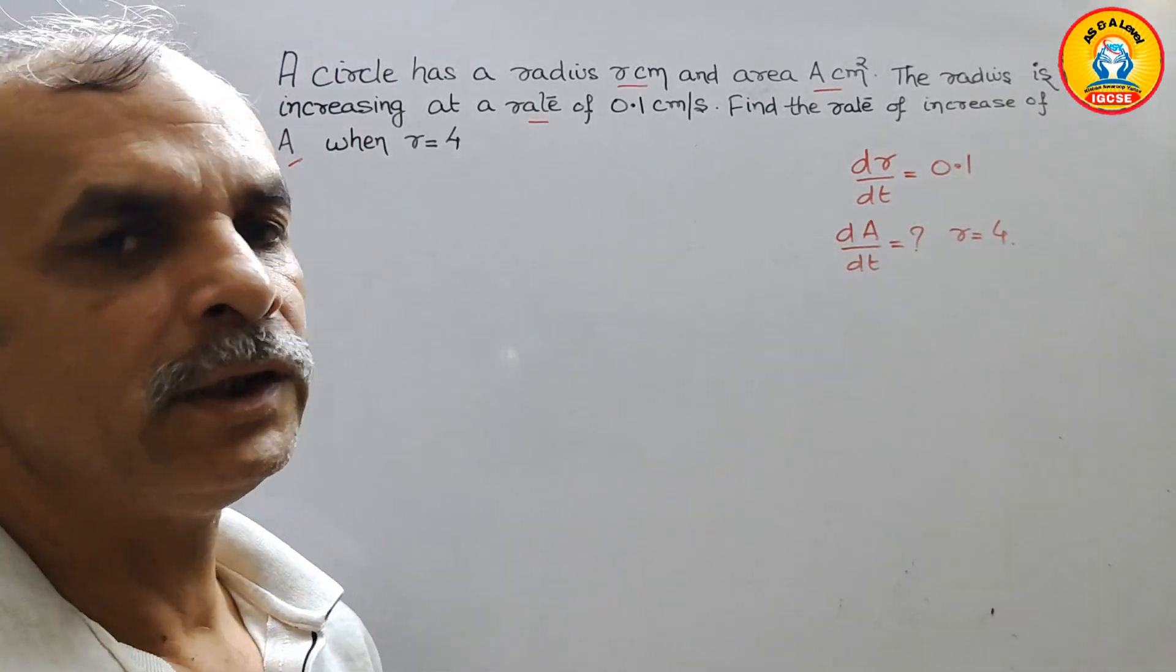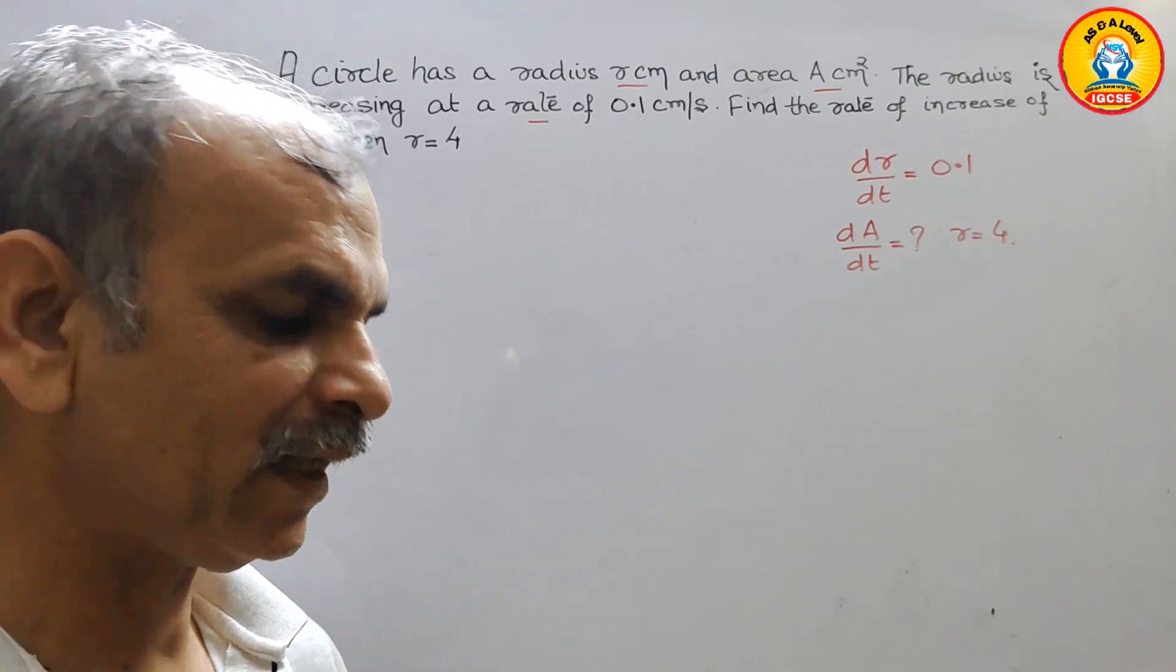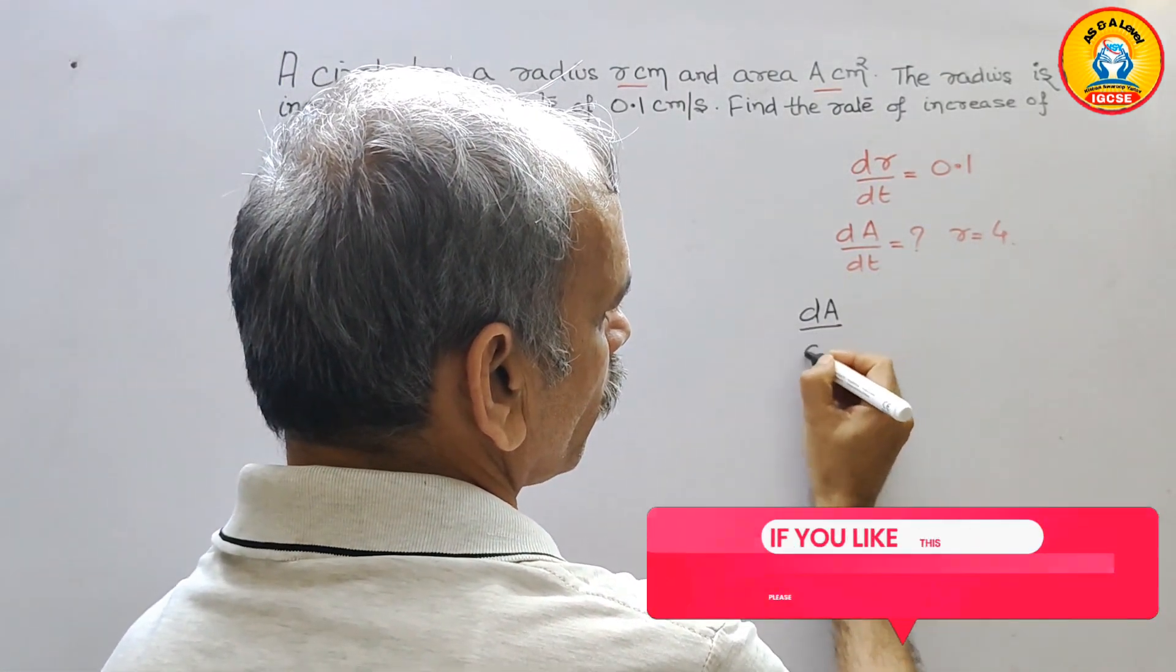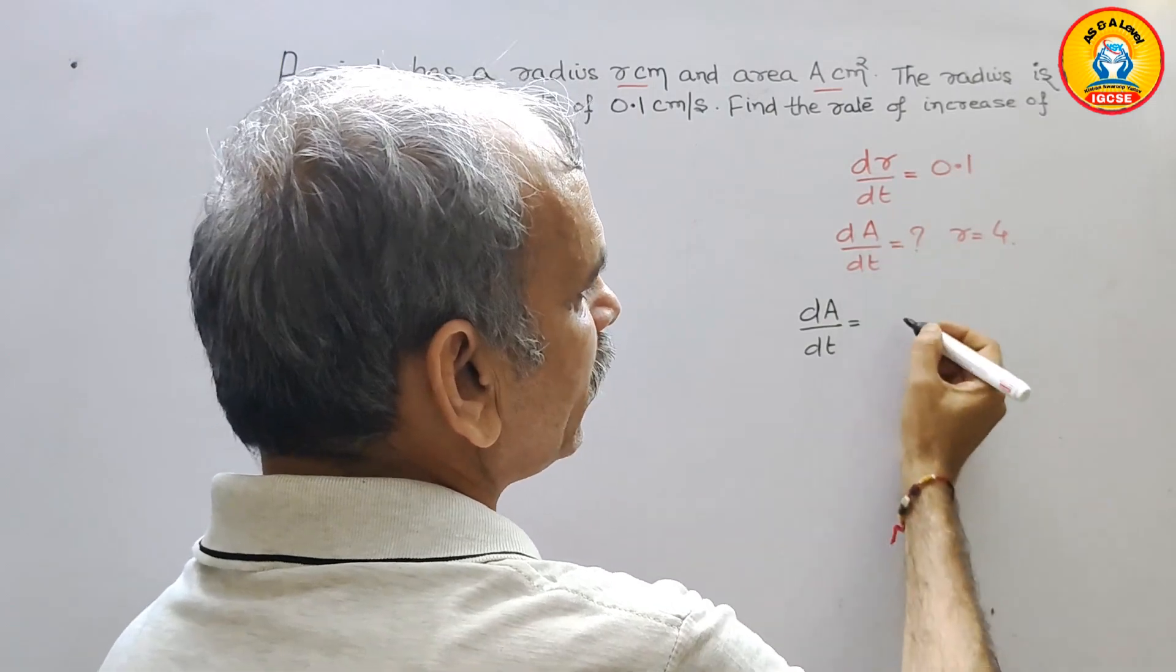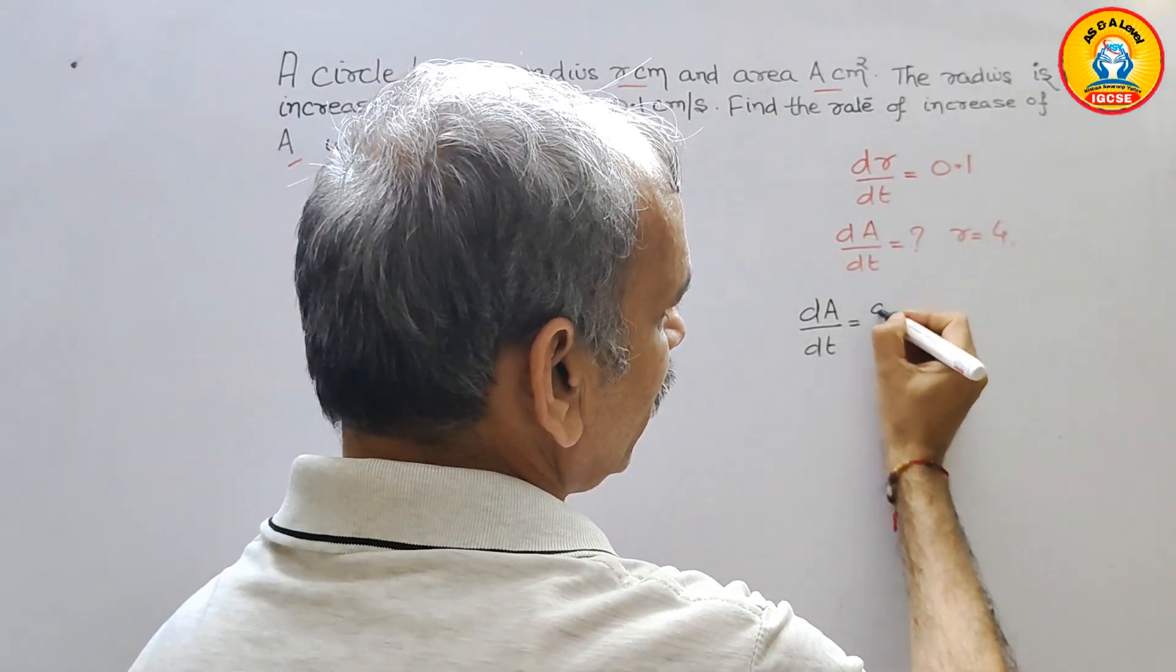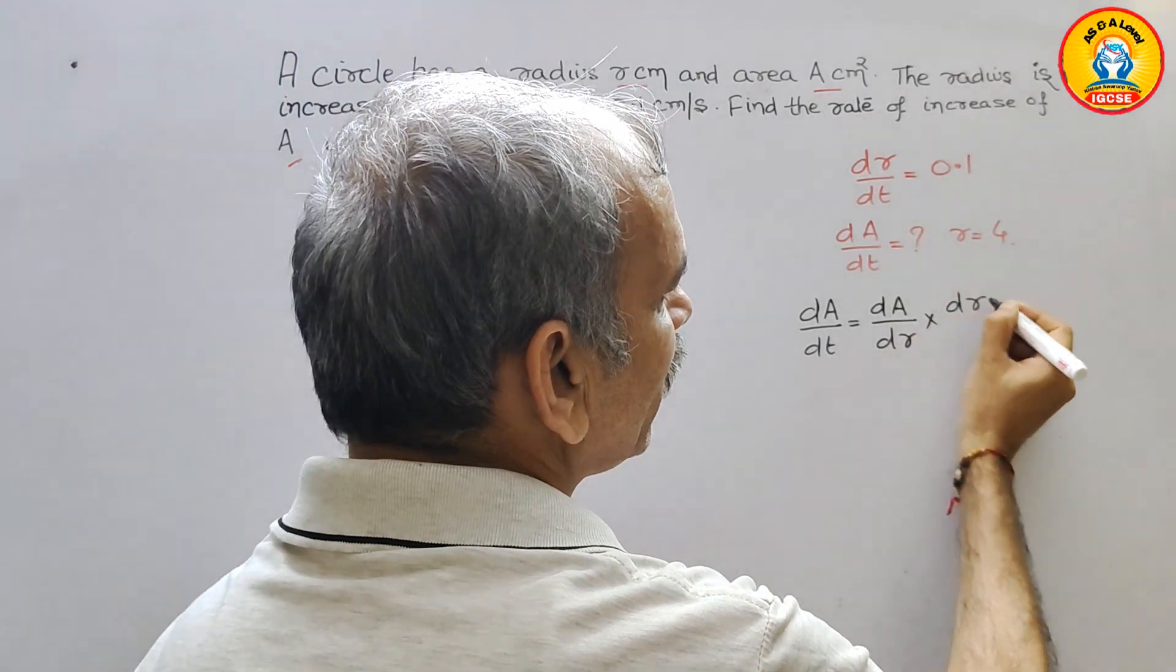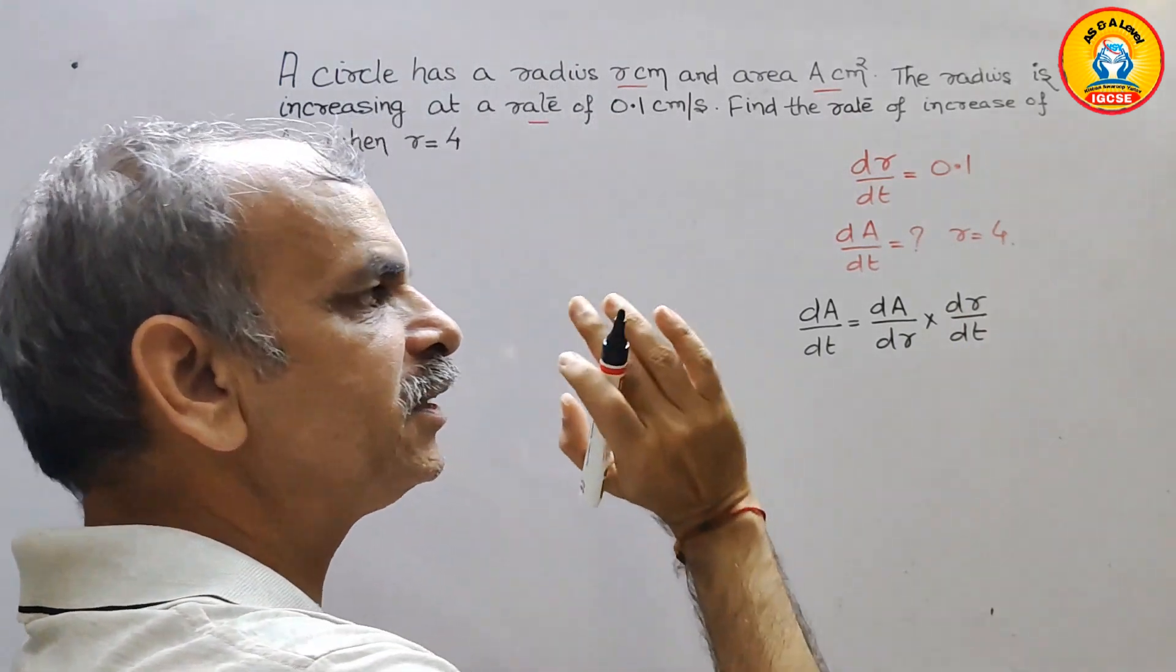So here we will follow our chain rule. What is that? Here they have told dA by dt. That is equal to, we can say now, first comes dA by dr into dr by dt. So this is the chain rule.